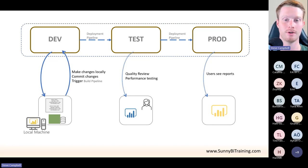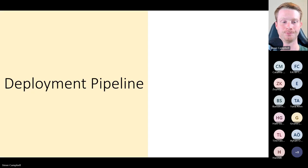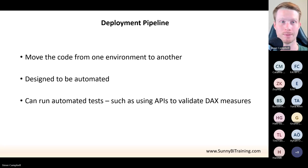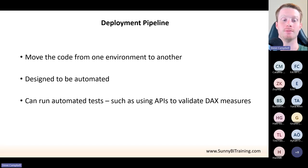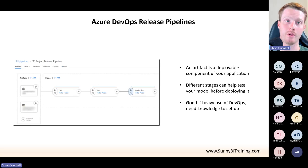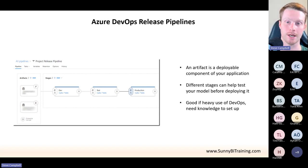Then if they are correct and we're happy, we run a deployment pipeline and it goes to the production environment. This is where your app would be — this is what end users are accessing and how they're going to view their reports. It's really about splitting out and making sure we have extra testing and lots of ways to catch errors before they go out. A deployment pipeline is really just a process which moves code from one environment to the other — in Power BI this could just mean copying the dataset from one workspace to the other. Designed to be automated, and we can run automated tests where possible. You can have them in Power BI Premium, and Azure DevOps has what they call release pipelines, which is the same thing.